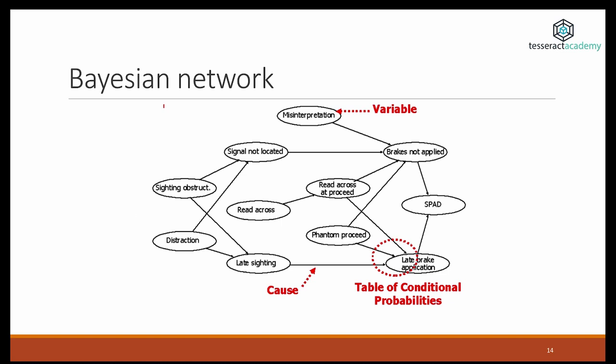This is an example of Bayesian network, and you can see here that you have various variables, and then you have arrows that indicate causal relationships, and then these arrows, there are some numbers behind them, and this is a table of conditional probabilities.